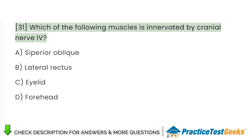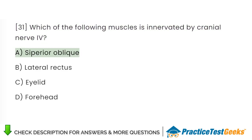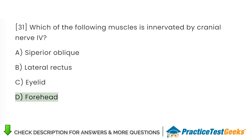Which of the following muscles is innervated by cranial nerve four? A. Superior oblique. B. Lateral rectus. C. Eyelid. D. Forehead.